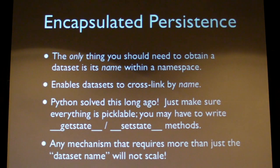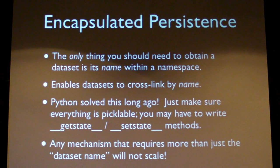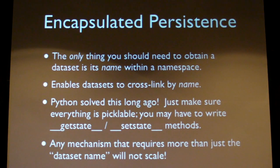On the issue of persistence, which WorldBase is really trying to address: there are many ways to achieve persistence — you could just use a relational database with SQL. However, we think it's useful to add an extra criterion we call encapsulated persistence: the only thing you need to get full access and interface to a dataset is just its name within a namespace. Python long ago provided the foundation for this capability, and I want to emphasize that anything requiring more than just a string as a name will not scale across large, complex data integration activities, basically because you can't automate it.